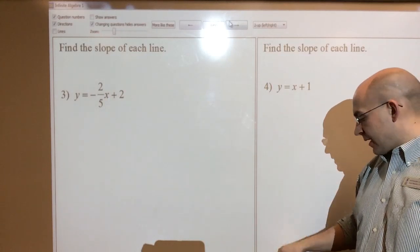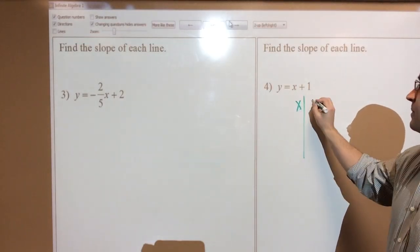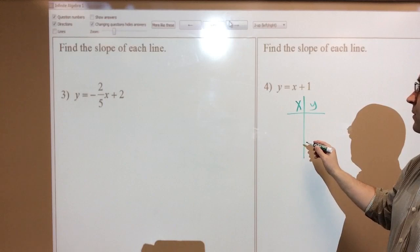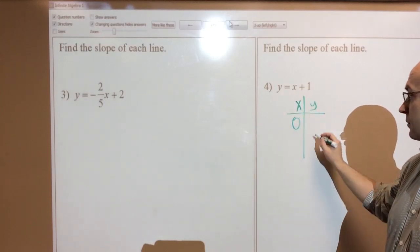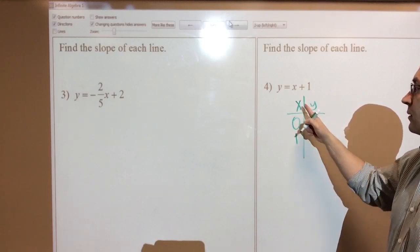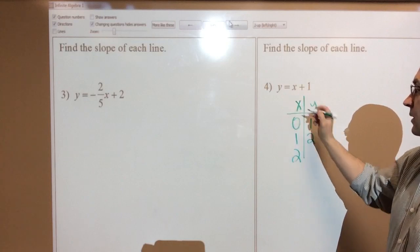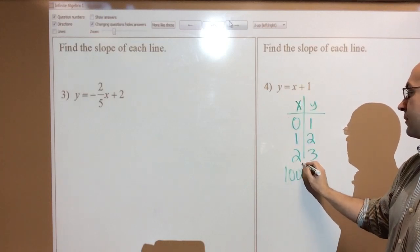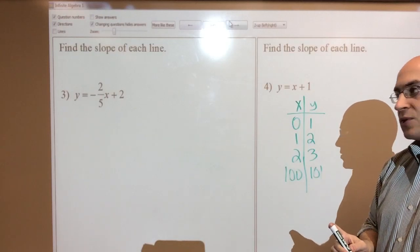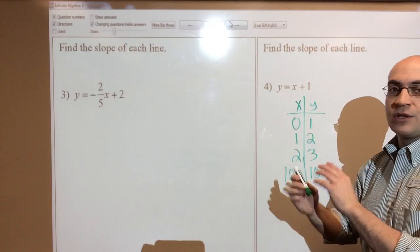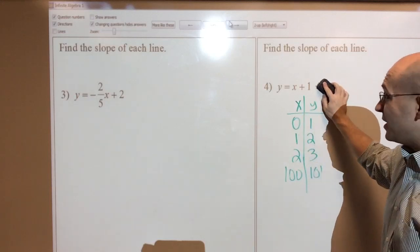Let's take this line. If I gave you a table of values, an xy table, you need to be able to give me some good points. So for instance, if x is 0, y would be what? 1. What if x was 1? Then y would be 2. What if x was 2? Then y would be 3. What if x was 100? So if x was 100, then y would be 101. So just be able to identify how these two things relate, because you can always plug stuff in.